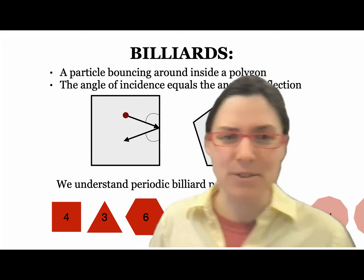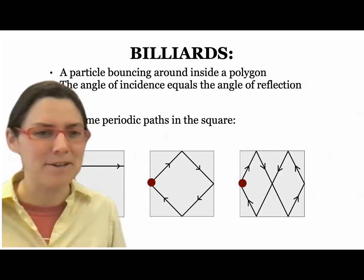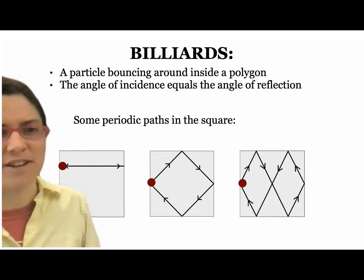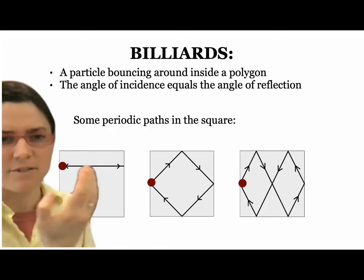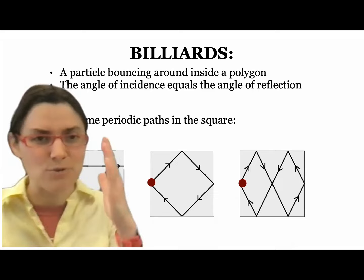We look at periodic paths. Other people study aperiodic paths and ergodic behavior, but I like periodic paths because they have a lot of beautiful structure related to number theory and continued fractions. Periodic paths are paths that bounce and then return to where they start and repeat. Here's a periodic path of period two, period four, period six, and so on in the square.